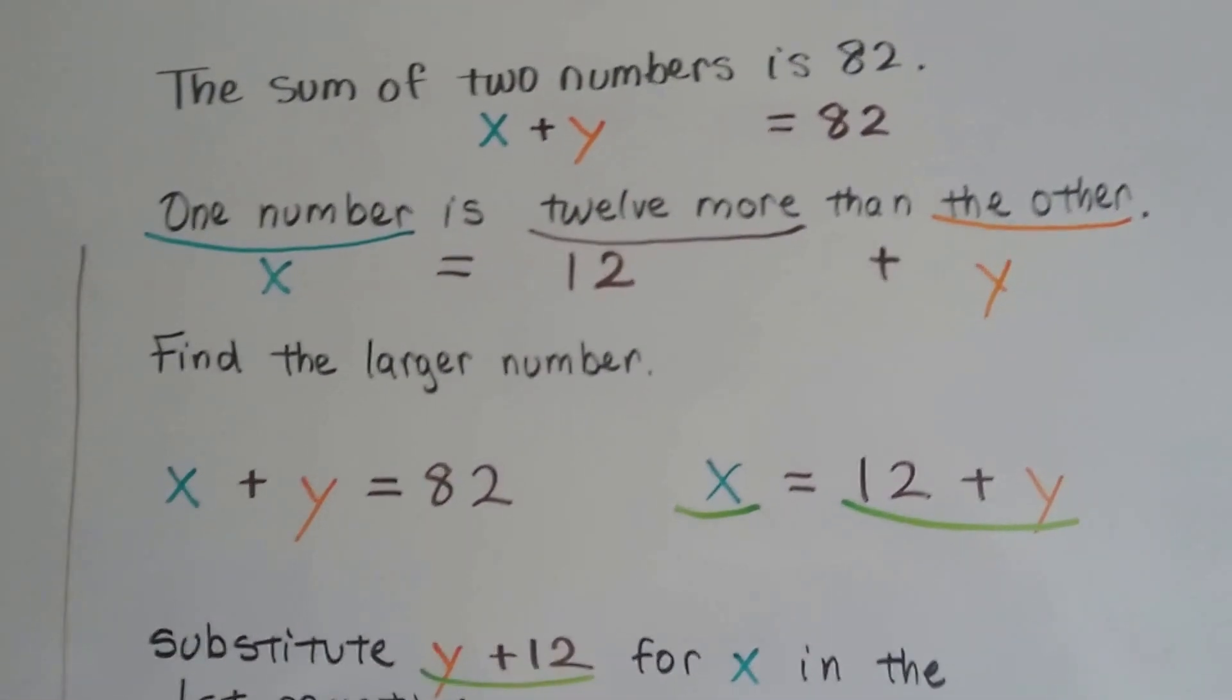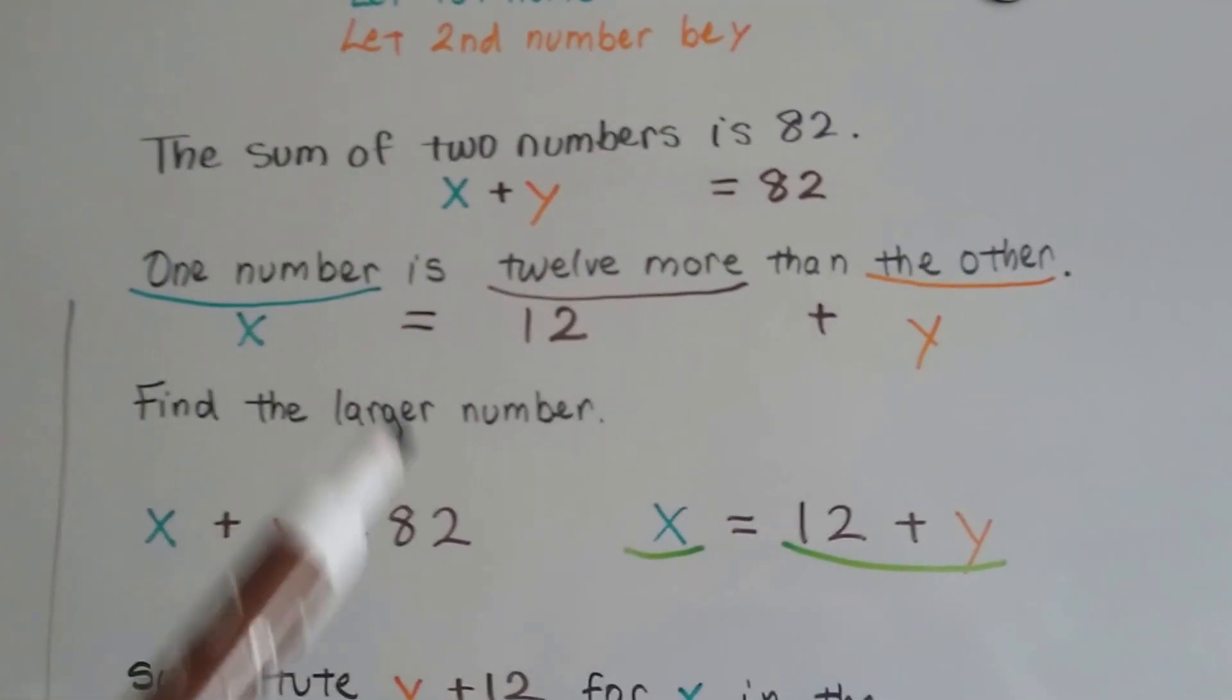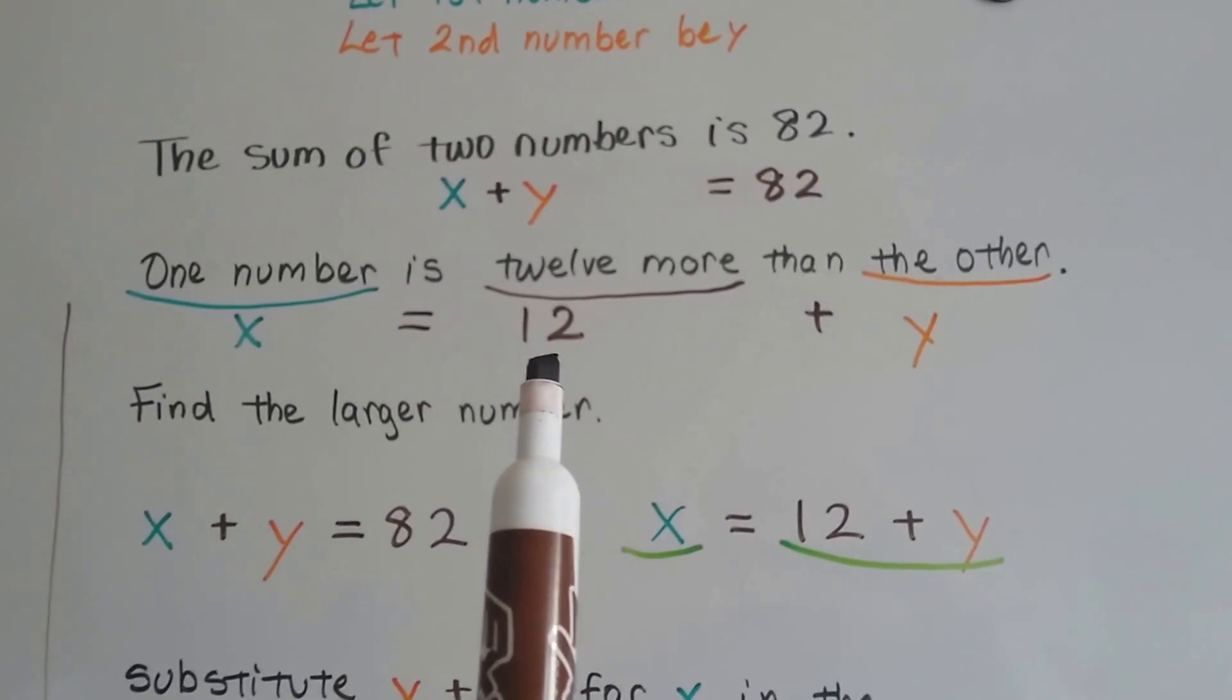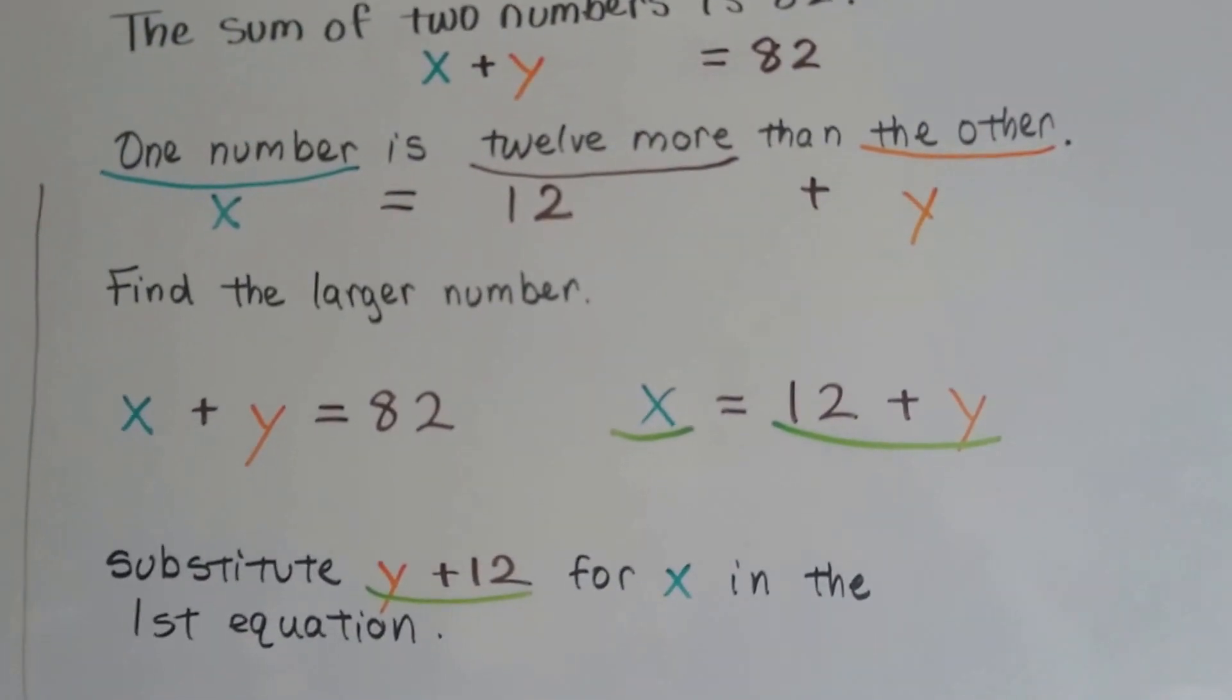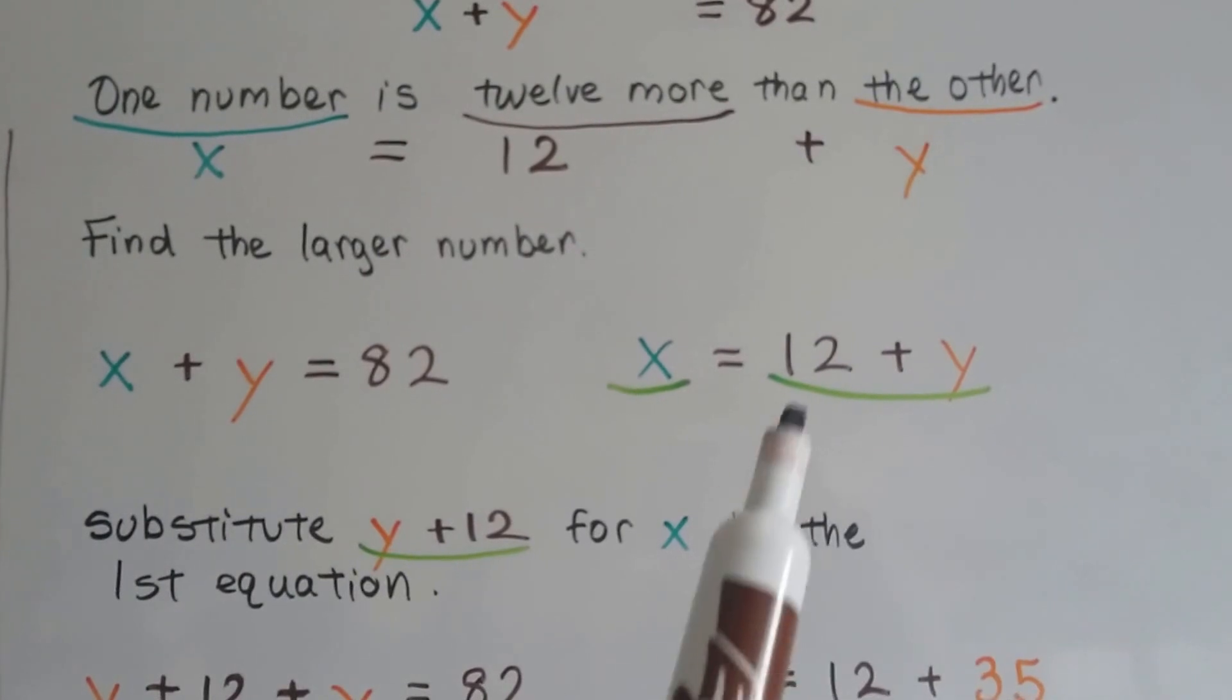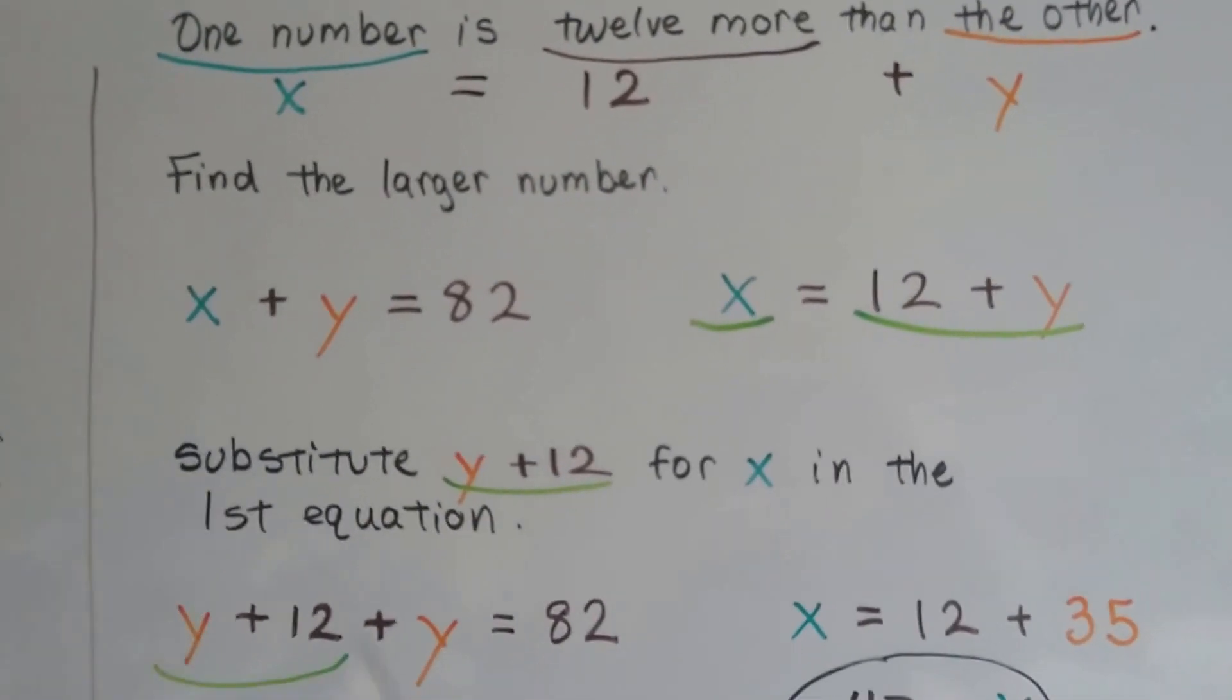The second one says one number, that's the first number x, is equals 12 more than. So it's not 12 times more. It's just 12 more. So we have 12 plus y. So x equals 12 plus y. So we can substitute this 12 plus y or y plus 12 in place of x in this equation.